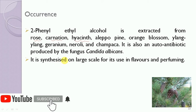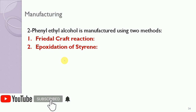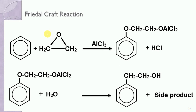Let us discuss its method of manufacturing. There are 2 methods used for the synthesis of 2-phenyl ethyl alcohol. The first one is the Friedel-Craft reaction. It involves a reaction between benzene and epoxide in the presence of aluminum trichloride. First of all, this intermediate compound will get formed, then this compound is treated with water and it will get converted into the final product, that is phenyl ethyl alcohol, along with a few side products.